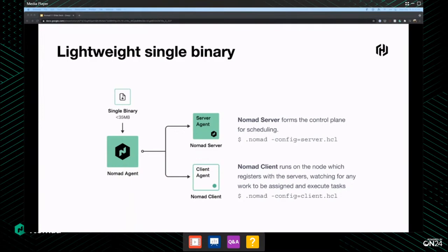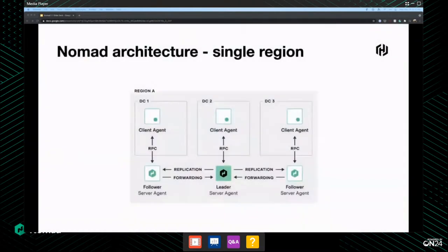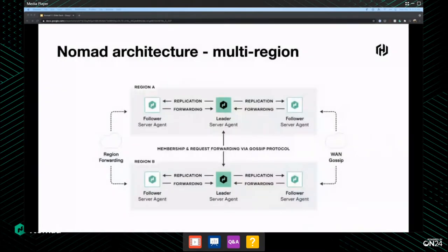Let's talk about some core concepts. As far as orchestration goes, the idea is you want to be able to take a lightweight single binary and run it. With non-containerized applications, you get the binary, you have a server with the agent installed, and you just run it there. You can use servers for scheduling and clients for where things actually run. You can do single region or multi-region architecture.